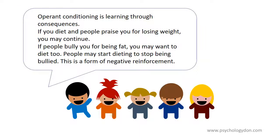Anorexia nervosa may also develop through operant conditioning, which is learning through consequences. If you diet and people praise you for losing weight, you may continue. If people bully you for being fat, you may want to diet too. People may start dieting to stop being bullied, and this is a form of negative reinforcement.